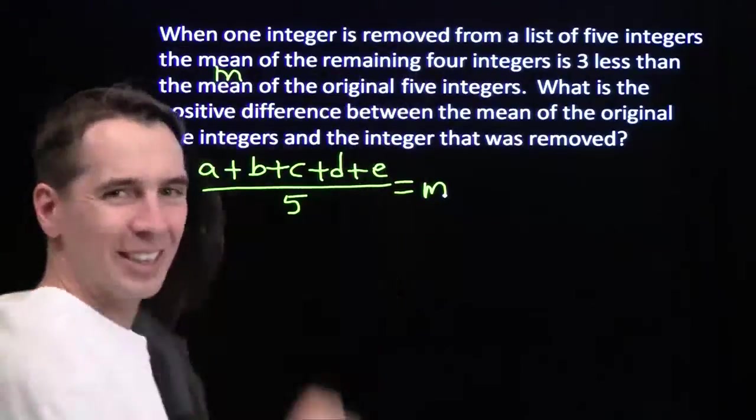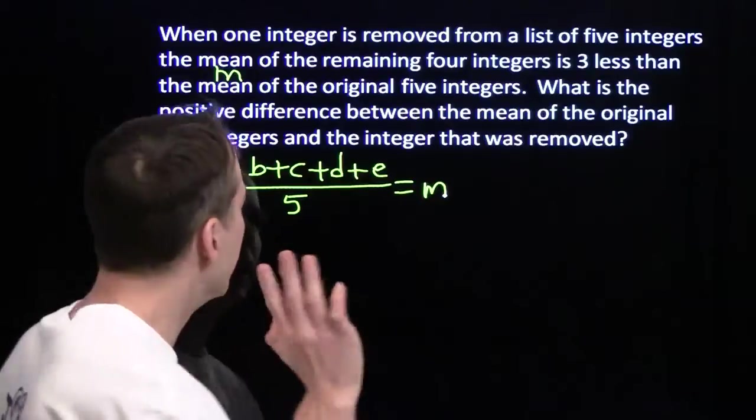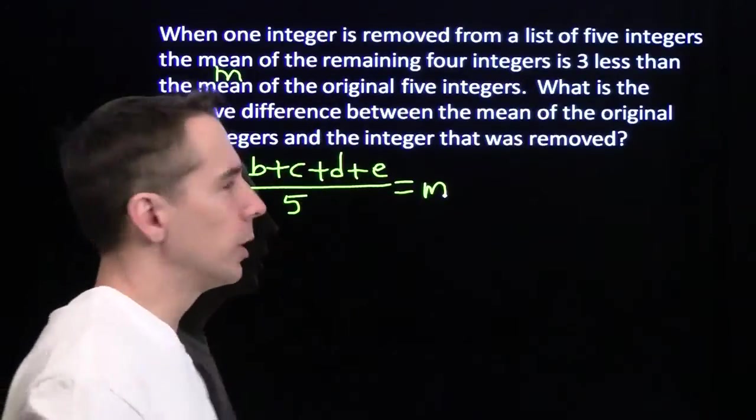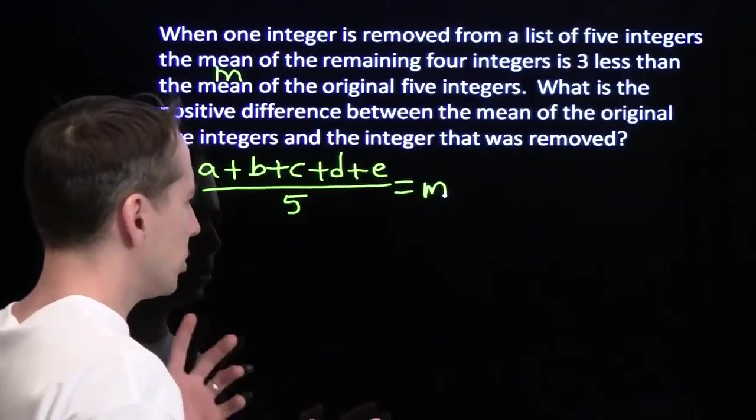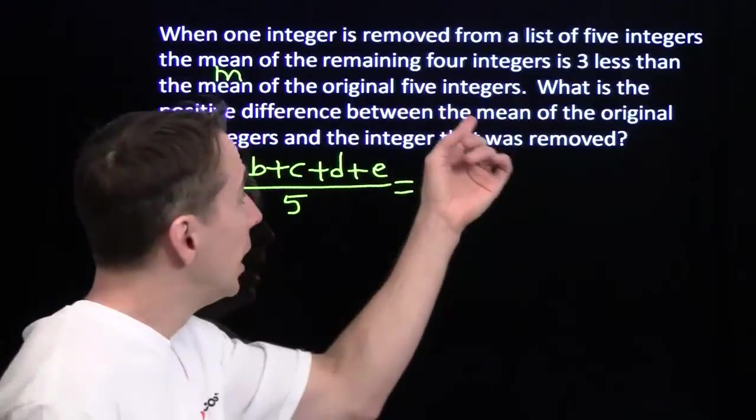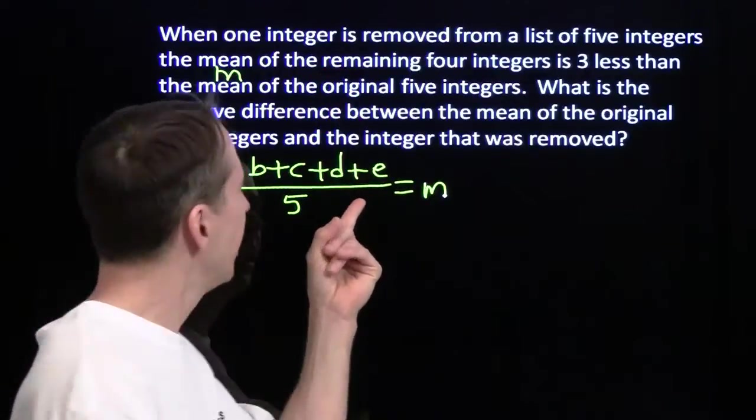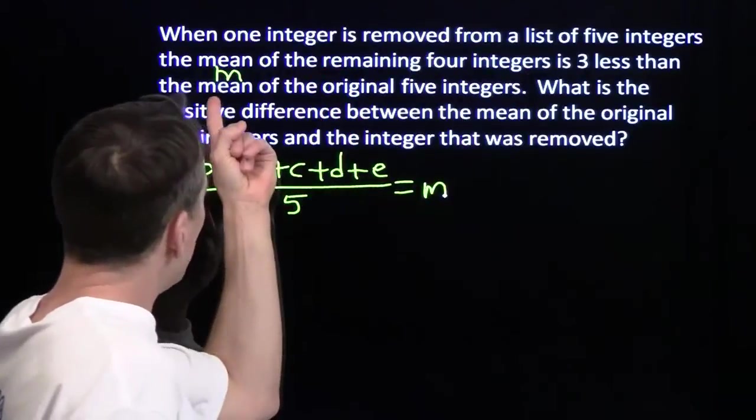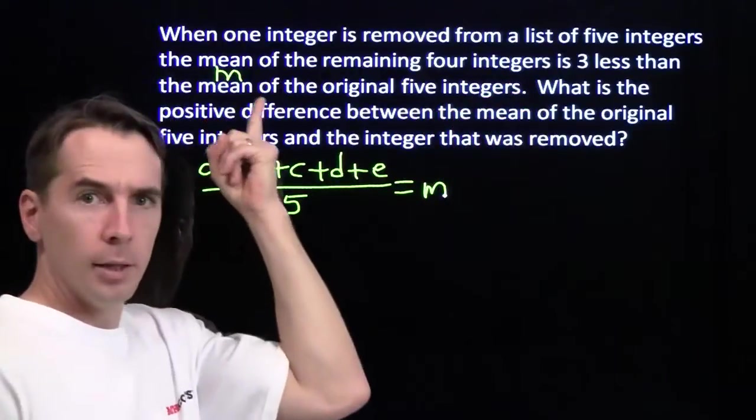That's much nicer than all that stuff up there, except there are six variables. And that's a little scary, but it's not as scary as all those words. So I've got one equation. Now I need another, I need a lot more equations, maybe. I've got a lot more information up here. If I remove one integer, E, I don't like E, E's gone. If I remove that, the mean of the remaining four integers is three less than M.